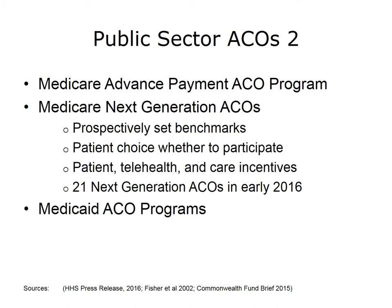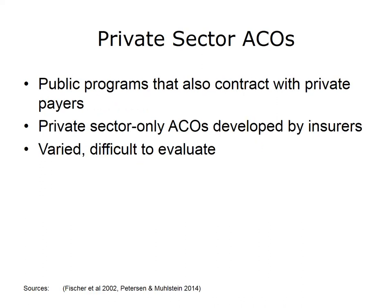In February 2016, there were 21 ACOs in the Next Generation ACO program. Finally, a few states are developing and adopting ACO models in their Medicaid programs, including Oregon, Iowa, Vermont, and Colorado. Medicaid ACOs use a variety of approaches and are too new to evaluate fully. Similar to the public sector, private sector ACO initiatives are also underway. Some ACOs formed to serve Medicare patients are also contracting with private insurance companies, and other commercial insurance firms are developing ACO models. In general, private sector ACOs have the same goals as public sector ACOs, but are not necessarily held to the same requirements regarding financial and quality performance. The private sector ACO activity is highly variable and has been difficult to track and evaluate.